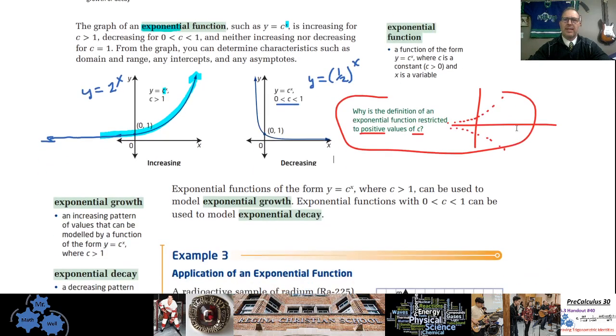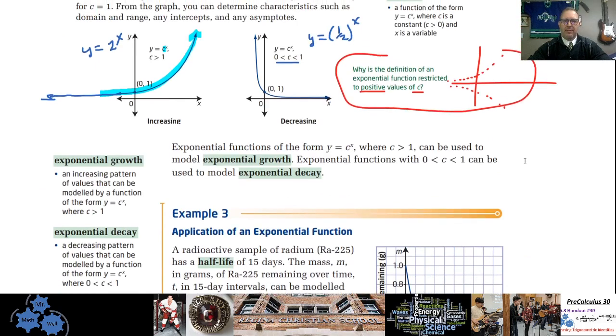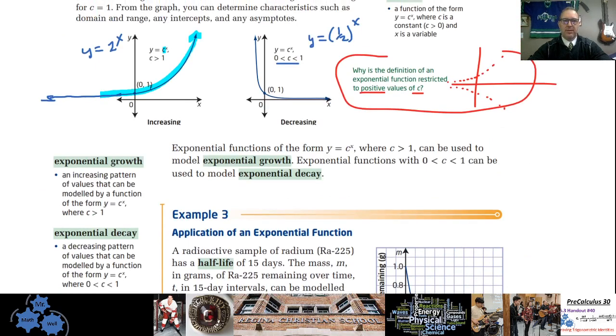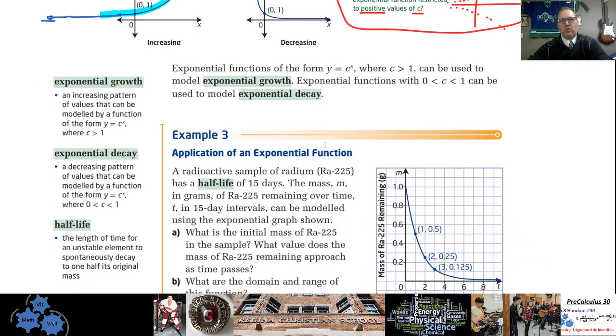Exponential growth and decay. Let's talk about those. You can probably imagine that an increasing function would represent a situation where we have exponential growth. The graph forms an exponential graph, an exponential shape, and it is growing or increasing. If something is decaying over time, then it would follow an exponential type graph, but it would be decreasing.